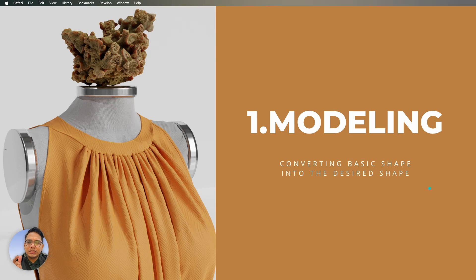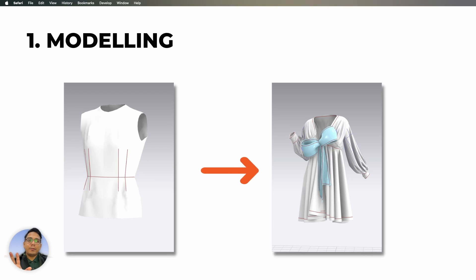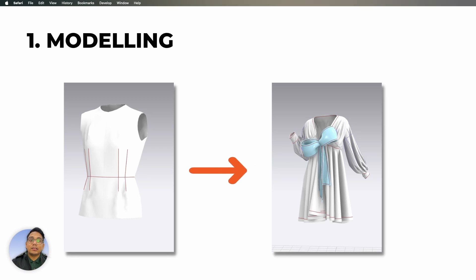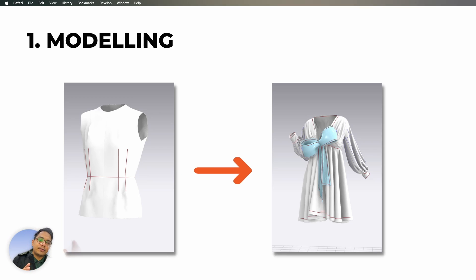Let's go through each stage one by one and understand what topics are essential. The first stage is called modeling. Modeling is about converting a basic shape into a dress — for example, a basic torso into a dress. Because we are in the field of fashion designing, technicality is really important. You may need to convert this into a physical pattern in the future, so the technical aspect of fashion designing is very important. Therefore, pattern making becomes highly essential.